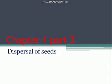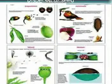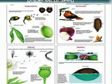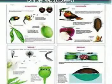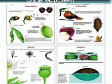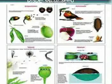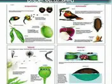Plants generally produce many seeds. If all the seeds were to grow near the mother plant, it would lead to overcrowding of the young plants. All these young plants will not survive because they would not get enough light, food, water, and space to grow, and many of these plants will die.